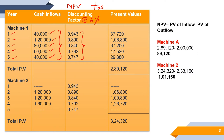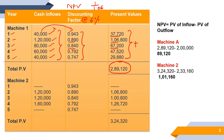Pressing equals again gives 0.840, then 0.792, then 0.747. Now, multiply each cash inflow by its corresponding discounting factor. Every cash inflow multiplied by the discounting factor gives the present value. So 40,000 multiplied gives 37,720. Similarly, 1,20,000 multiplied by the factor gives 1,06,800. Then 80,000 multiplied by 0.840 gives its present value. Add all the present values together to get the total present value of 2,89,120 for Machine 1.